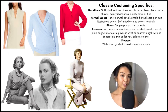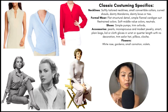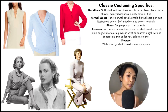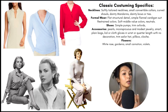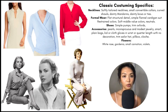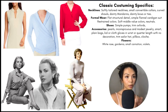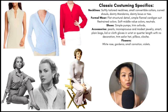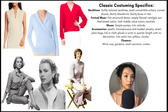For more specific examples listed in the book: necklines include very softly tailored necklines, small convertible collars, curved shawls, dainty mandarins or stand-up collars, and dainty bows or ties that can soften more harsh necklines. Formal wear has more flat structural detail — stitch-down detail that has structure and shape to it. Simple flannel cardigan suits are listed as good options. Restrained colors are great — soft, middle-value colors and neutrals are awesome. Shoes include simple pumps and trim oxfords.